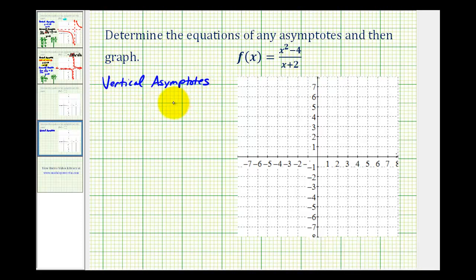Vertical asymptotes occur at the zeros of the denominator that are not also zeros of the numerator. So it's important that before we consider vertical asymptotes, we try to factor and possibly simplify our rational function.